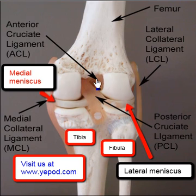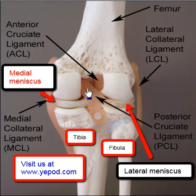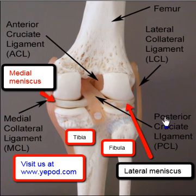One is called the anterior cruciate ligament; the other one is called the posterior cruciate ligament. Many times we will say ACL for anterior cruciate ligament and PCL for posterior cruciate ligament, just to be more simplistic in communicating.